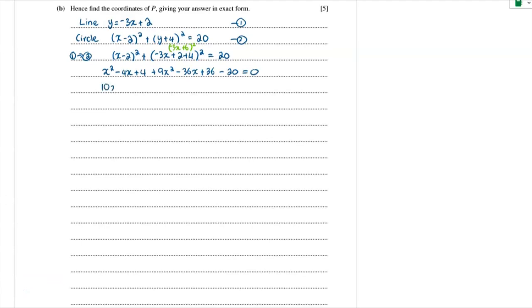Simplifying, collecting like terms, 10x squared minus 40x plus 20 equals 0. And we can divide by 10 to make it easy. x squared minus 4x plus 2 equals 0.